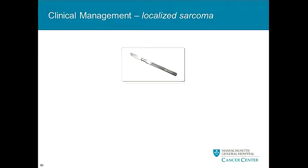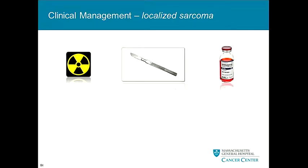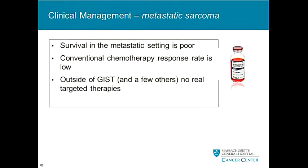Our current clinical management has really been stuck in the same place for about 30 years. We still do surgery for localized disease, and for patients with high-grade tumors, we often incorporate some combination of radiation and chemotherapy. For patients with metastatic disease, survival is really poor — for soft tissue sarcomas, average survival in the metastatic setting is only 12 months. We're still using adriamycin; it's our best drug, believe it or not, and our response rates to chemotherapy are quite low.